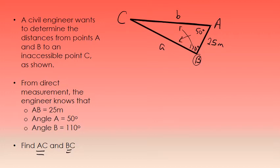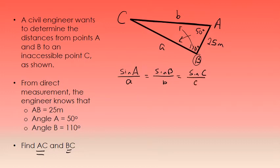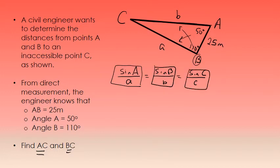To solve this problem, I'm going to use the law of sines, which is a way that three ratios are equal: the sine of angle A over side A equals the sine of angle B over side B, which equals the sine of angle C over side C. To use the law of sines, you need to know at least one angle and the side across from it.